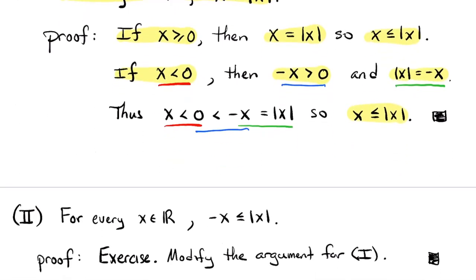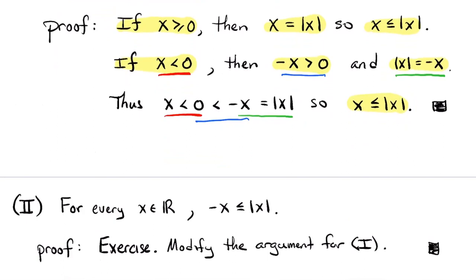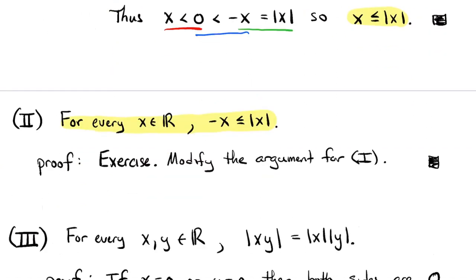I'm going to leave it as a little exercise for you to modify the above argument to show that for any real number, its opposite never exceeds its absolute value. Pause the video and work through the two cases — it'll be fun and you will be successful. So there are our first two properties: a number or its opposite never exceed the absolute value of that number.